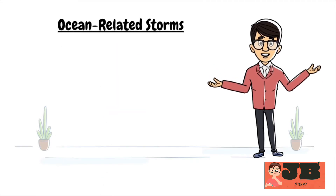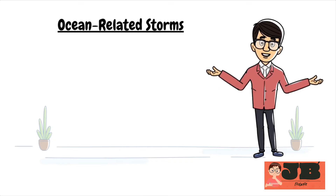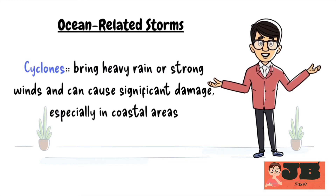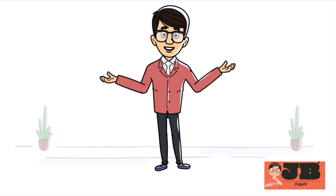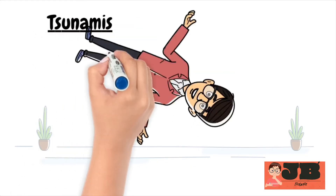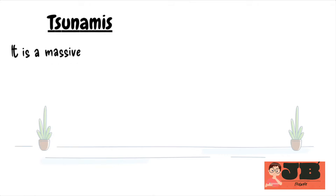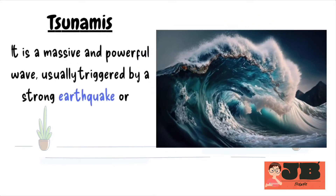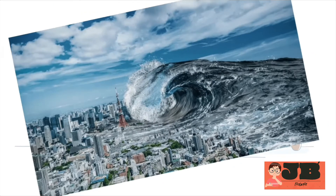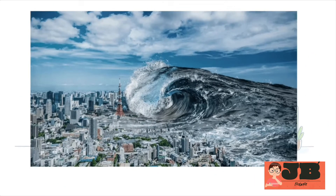Next, let's discuss ocean-related storms. Oceans can also create powerful storms. These storms, like cyclones, bring heavy rain or strong winds and can cause significant damage, especially in coastal areas. Another dangerous natural event that begins in the ocean is tsunamis. A tsunami is a massive and powerful wave, usually triggered by a strong earthquake or a volcanic eruption beneath the ocean. Tsunamis can travel over long distances and flood coastal areas, leading to widespread destruction.